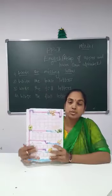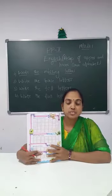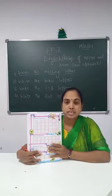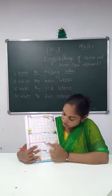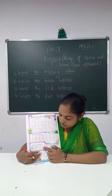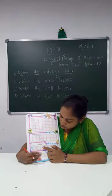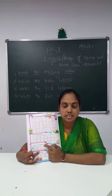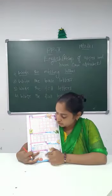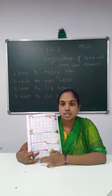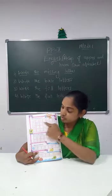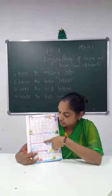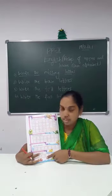In English we have three kinds of alphabets, that is letters: base letters, tall letters or hanging letters, and falling letters. So we have these three types of letters. Now first we will fill in the missing letters, write them as single alphabets, and then we will identify base letters, tall letters, and falling letters.